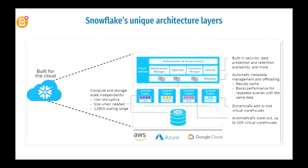Looking at this diagram, Snowflake is a multi-cloud layered platform. BigQuery is always deployed on Google Cloud Engine, and Redshift is always on AWS. But Snowflake is multi-cloud — it can be deployed on AWS, Azure, or Google Cloud. Whoever wishes to use whatever platform can deploy Snowflake on top of it. As discussed, the three layers are: cloud services layer, compute engine (processing) layer, and storage layer.